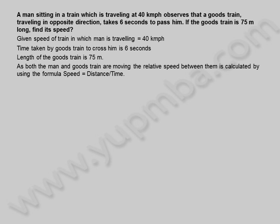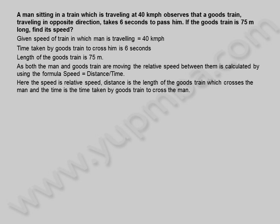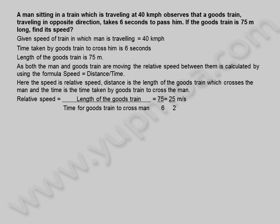As both the man and goods train are moving, the relative speed between them is calculated by using the formula speed is equal to distance by time. Here the speed is relative speed, distance is the length of the goods train which crosses the man, and the time is the time taken by goods train to cross the man. Relative speed is equal to length of the goods train divided by time for goods train to cross man.